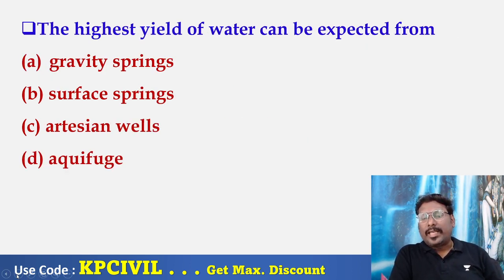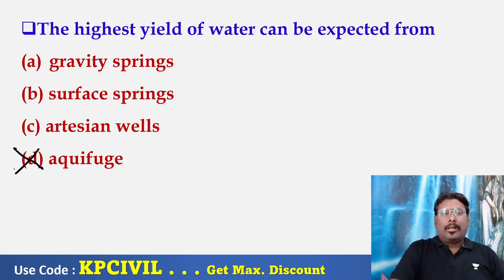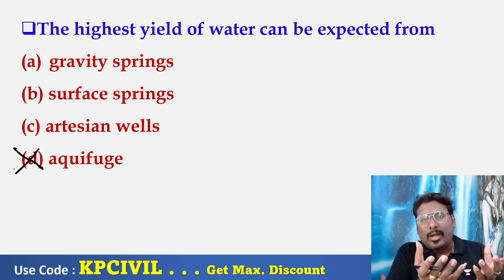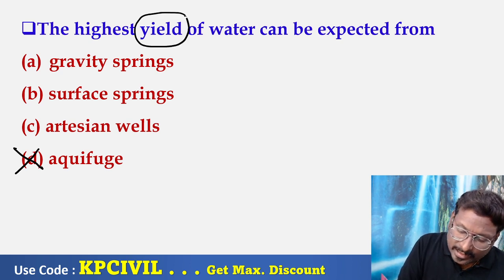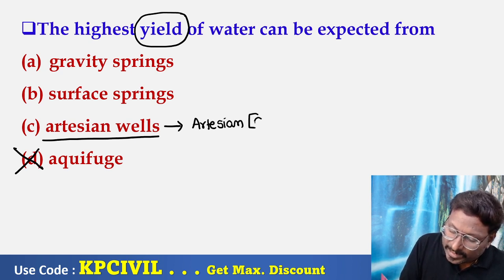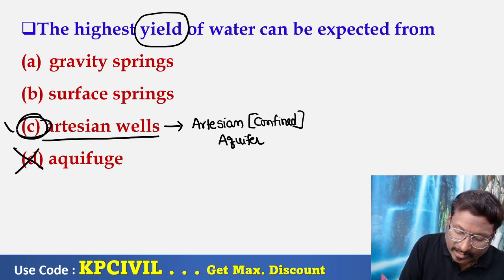Highest yield of water can be expected from — yield should be more. Options include springs (gravity or surface springs) and artesian well. Active faults never provide water — no yield. Gravity springs and surface springs do not give that much yield. Highest yield is from artesian wells, because artesian wells come from a confined aquifer. Confined aquifer will give more water. The source of an artesian well is a confined aquifer.